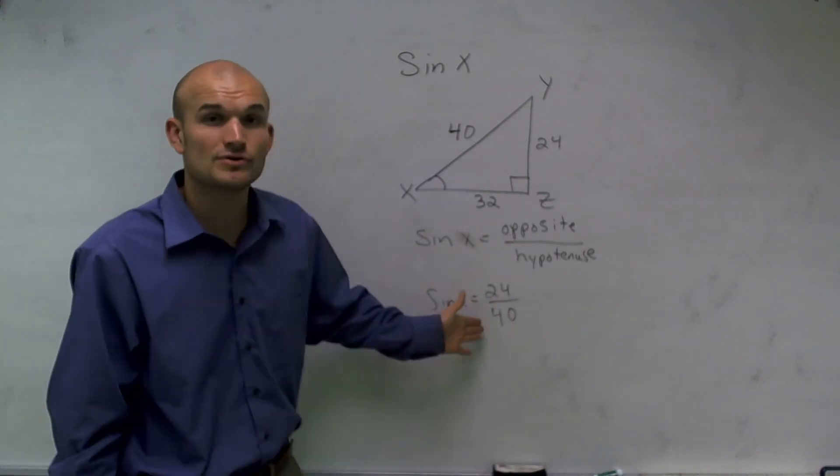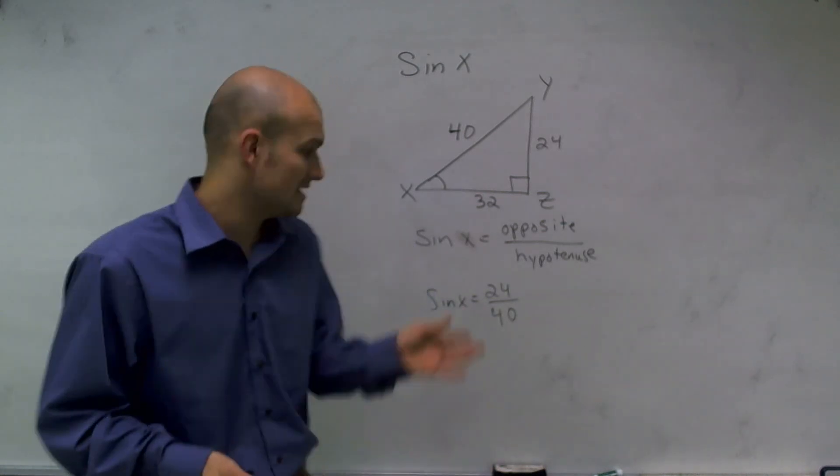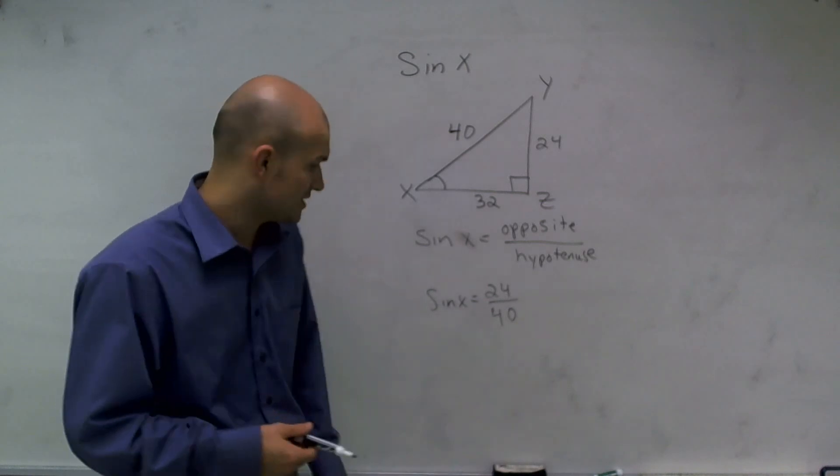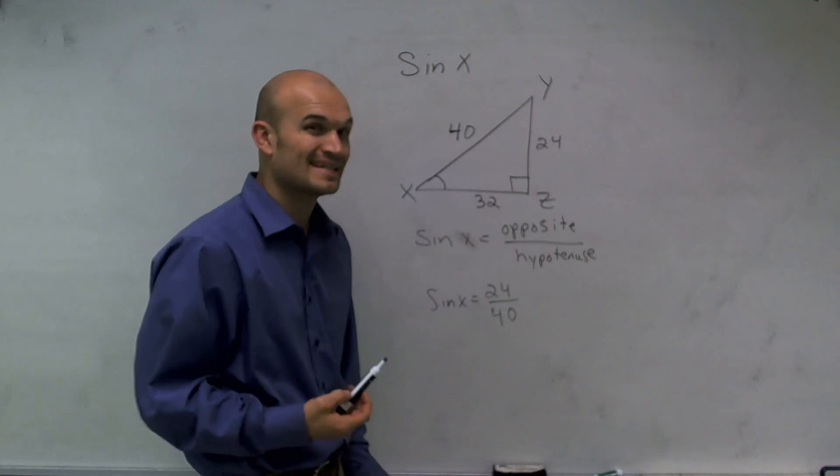And now I can reduce that. I need to figure out what number divides evenly into 24 and divides evenly into 40. I want to look at the largest number. So the largest number that goes into 24 and 40 is 8.